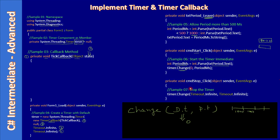During the Stop button click, we also use the timer.Change() method. We set due time as Infinite and period also as Infinite. Setting both to Infinite absolutely stops the timer — it will no longer fire.